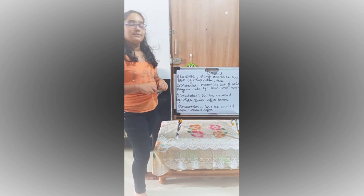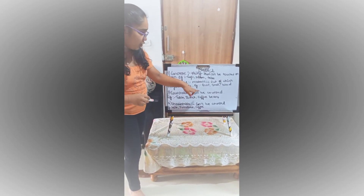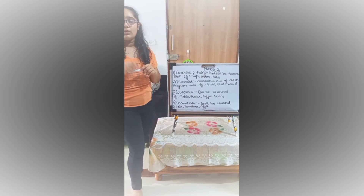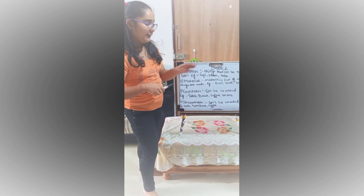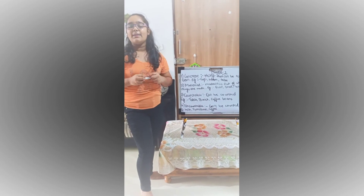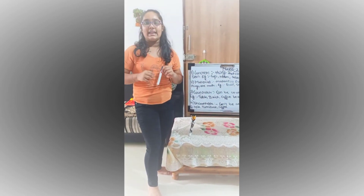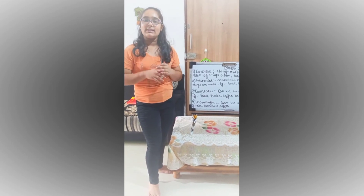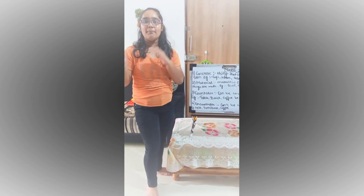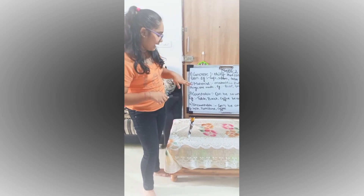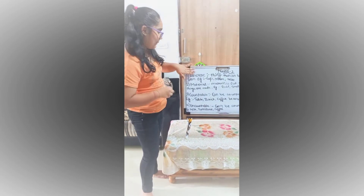Next we have material nouns. Material nouns are names of things out of which other things are made. For example, gold, steel and wood — we use gold for making jewelry, silver for cutleries, steel for making iron things and wood for making furniture. Here many students may have confusion about the difference between concrete noun and material noun. Suppose we have a building — it's made out of brick and cement, so brick and cement are material nouns. And building, which is the thing that can be seen or touched, will come under concrete nouns.